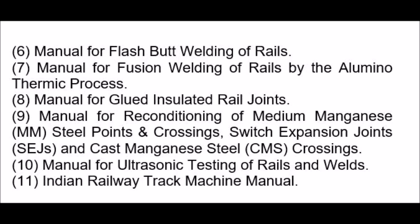Further manuals include: Manual for Flashbutt Welding of Rails; Manual for Fusion Welding of Rails by the Aluminothermic Process; Manual for Glued Insulated Rail Joints; Manual for Reconditioning of Medium Manganese (MM) Steel Points and Crossings, Switch Expansion Joints (SEJs), and Cast Manganese Steel (CMS) Crossings.